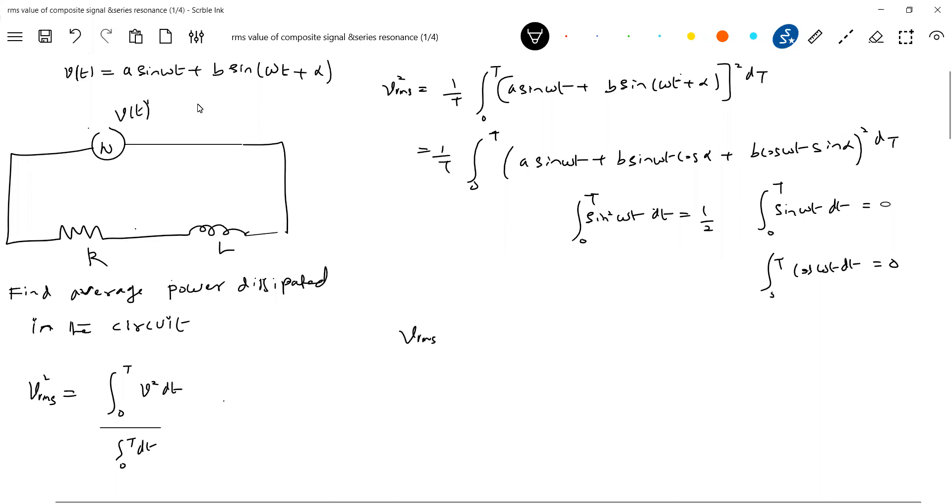So if I solve this, I'll end up with the equation like this. So VRMS square is equal to A by root 2 whole square plus B by root 2 whole square plus AB cos alpha. What is alpha? Alpha is the phase of the second component. So this, if I put it, you have to solve mathematically. This is a value. I think you have to be careful here. This is the maximum value. So this should be A by 2 only will come. A square by 2 plus B square by 2 plus AB cos alpha. This is a generalized formula.